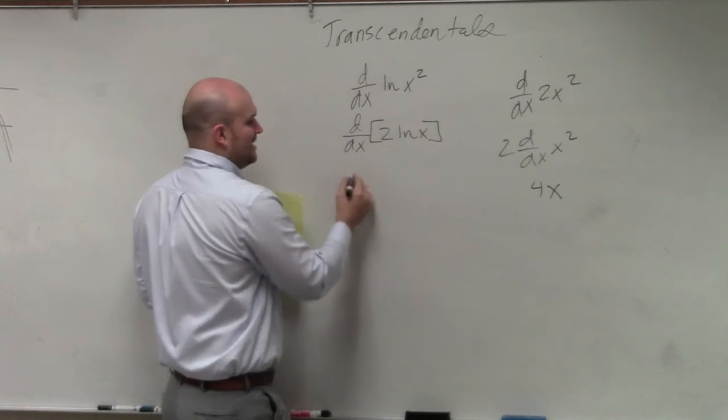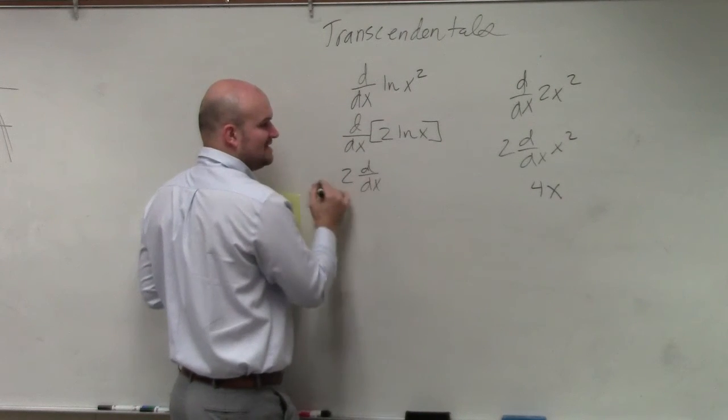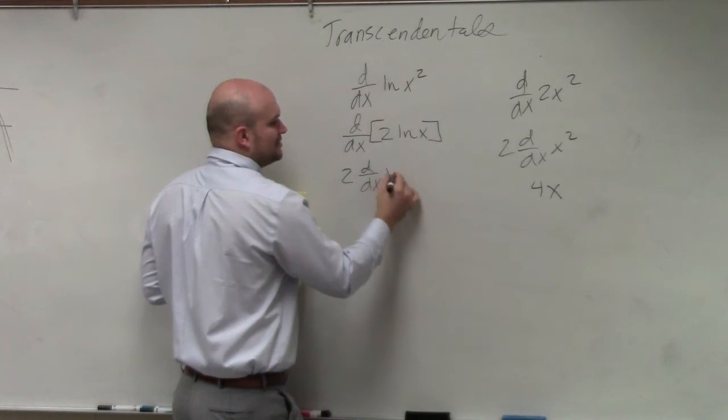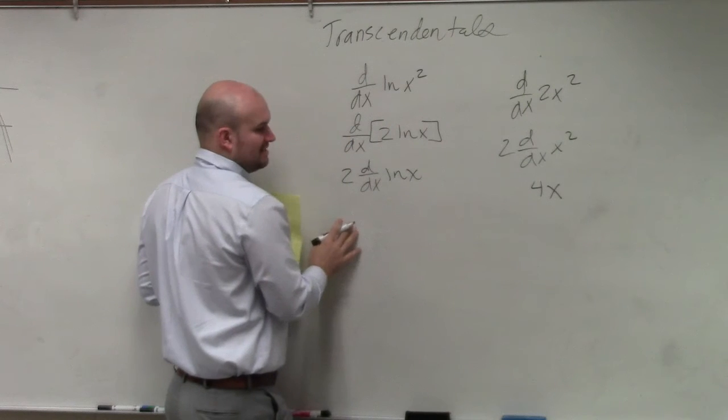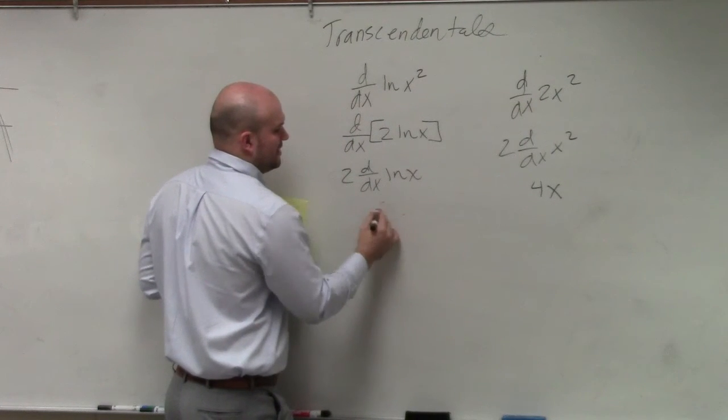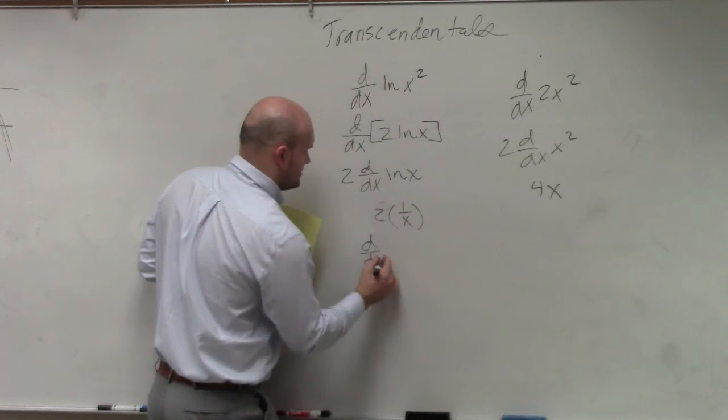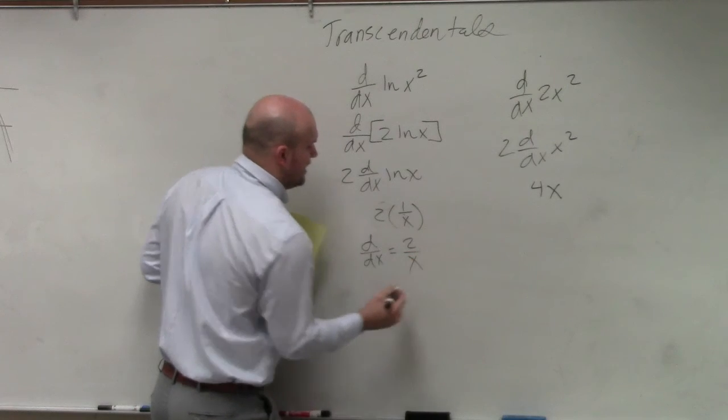So this is going to be the exact same thing. I can take that 2 out. That's why it's helpful to use that rule. And then I just need to do the derivative of ln of x, which my final answer would be 2 times 1 over x, which is 2 over x.